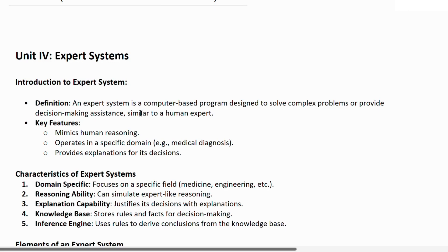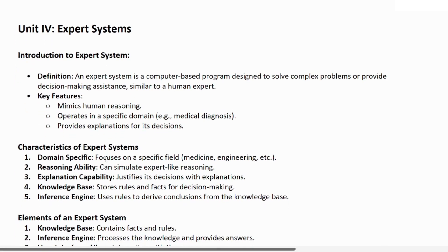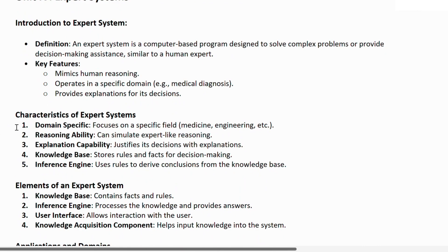First of all, what is an expert system? An expert system is a computer-based program designed to solve complex problems or provide decision-making assistance similar to a human expert. Some key features of expert system are: it mimics human reasoning, operates in a specific domain, and also provides explanation of its decisions. Characteristics of expert system are: domain specific — meaning focus on a specific field; reasoning ability — can simulate expert-like reasoning; explanation capability — it justifies the decision with explanation; knowledge base — stores rules and facts for decision making; and the last one, inference engine — uses rules to derive conclusions from the knowledge base.